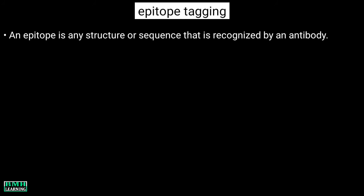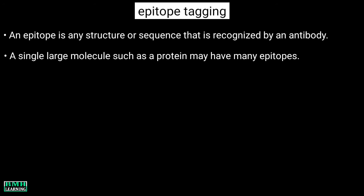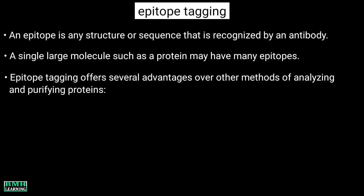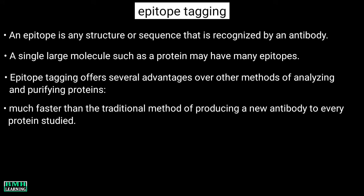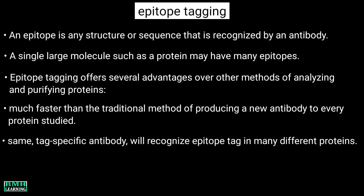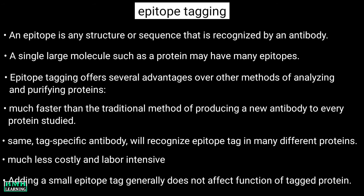The fourth and final type is epitope tagging. An epitope, also called an antigenic determinant, is any structure or sequence that is recognized by an antibody. A single large molecule such as a protein may have many epitopes. Epitope tagging offers several advantages over other methods of analyzing and purifying proteins. It is much faster than the traditional method of producing a new antibody to every protein studied, and the same tag-specific antibody will recognize the epitope tag in many different proteins. Epitope tagging is also much less costly and labor-intensive than setting up and maintaining antibody-producing facilities. Adding a small epitope tag generally does not affect the function of the tagged protein, allowing the study of the tagged protein's role in the cell.